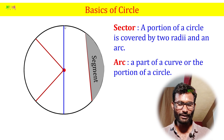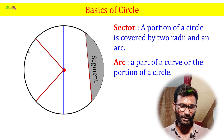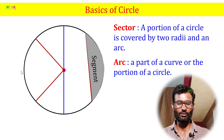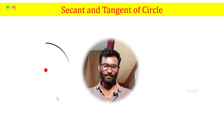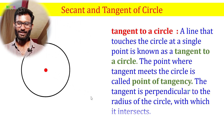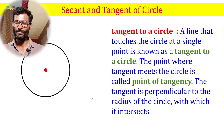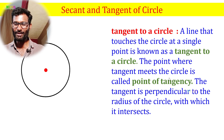A sector is a portion of a circle covered by two radii and an arc. So with one radius, draw to the other, and the arc between them — that area is the sector. The arc is the curved part of the circle between the two radii.